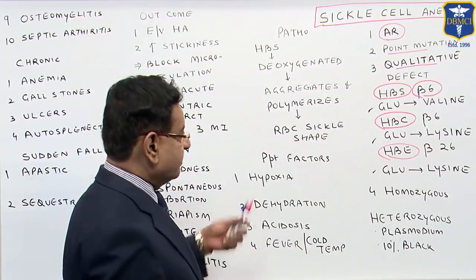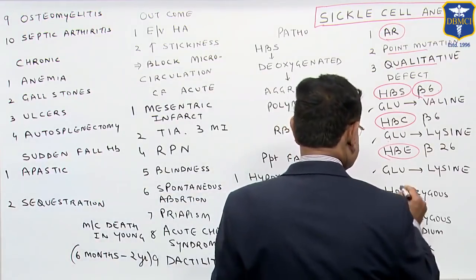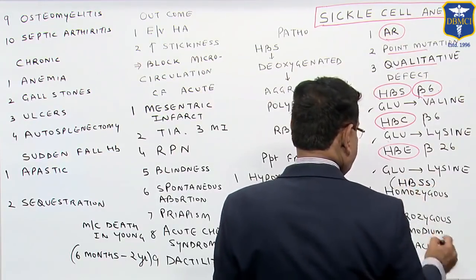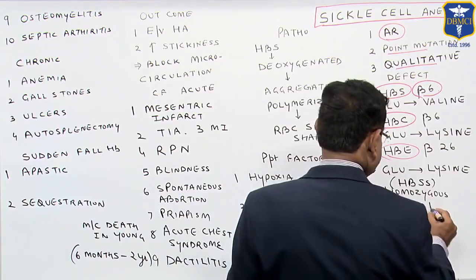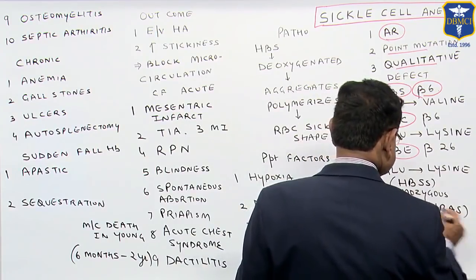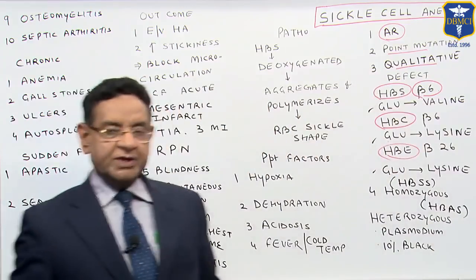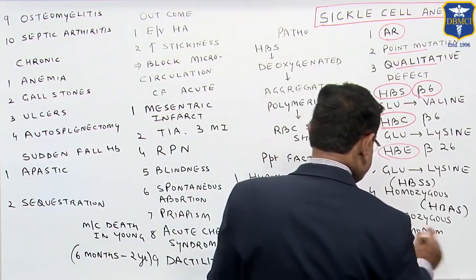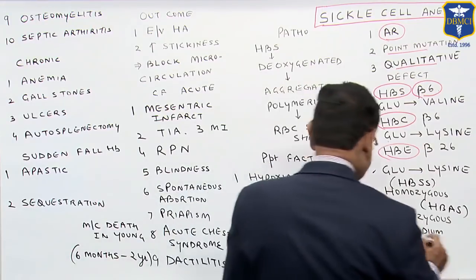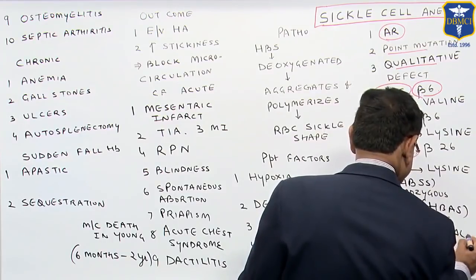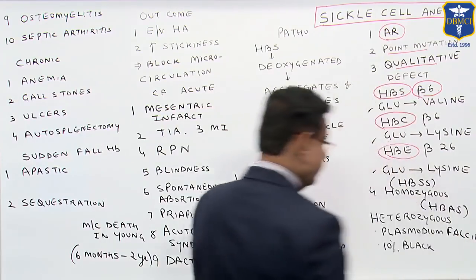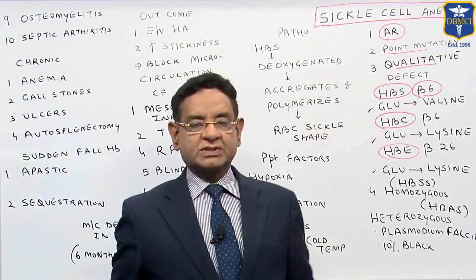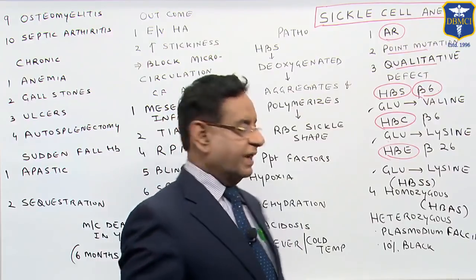It may be homozygous — written as HbSS — or it may be heterozygous — written as HbAS. Heterozygous individuals are resistant to Plasmodium falciparum, and about 10% of blacks usually have a heterozygous type of sickle cell anemia.